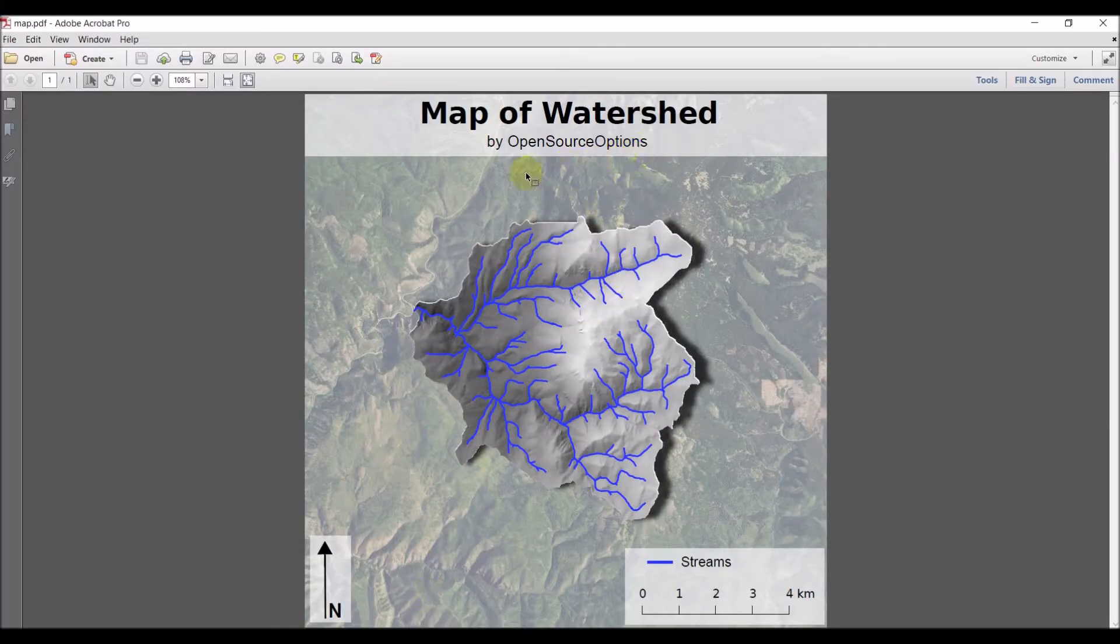we're going to start out by making a very simple map of a watershed. We're going to add in a few components that are difficult to do in software like QGIS or ArcGIS. One of those is a drop shadow that looks nice on the map here.